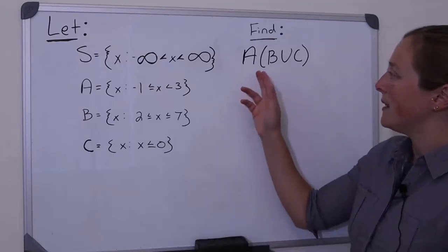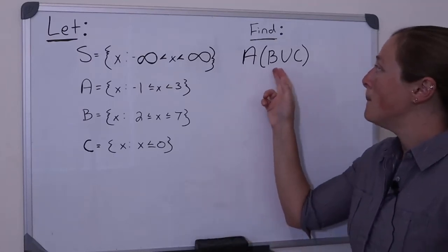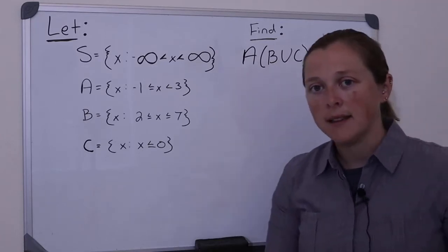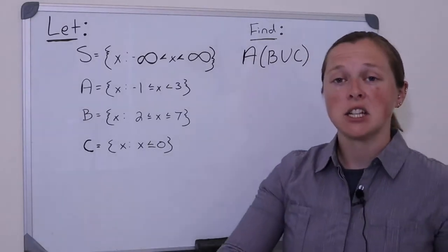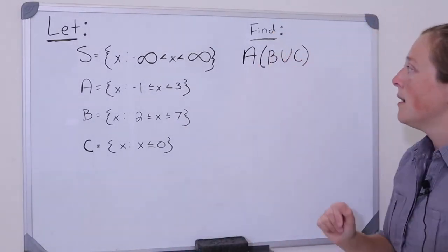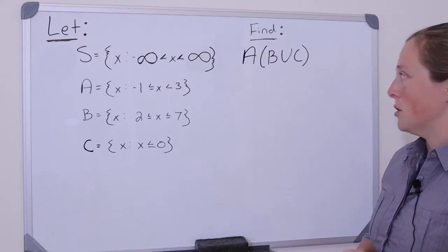Alright, so let's talk about how to find A intersection B union C. And you might be saying to yourself, I don't see that intersection sign, the intersection sign being that upside down U. You just have written this without the intersection sign.